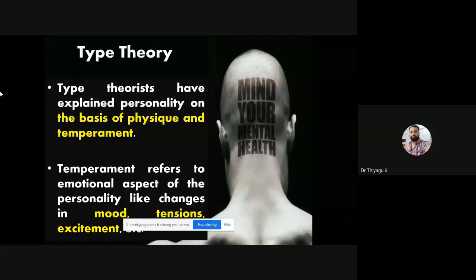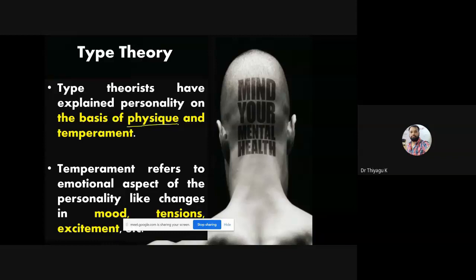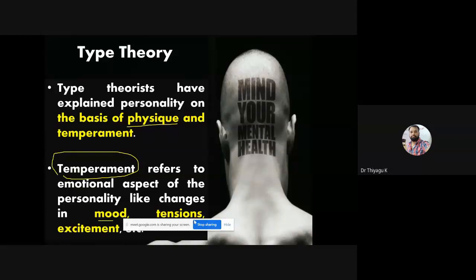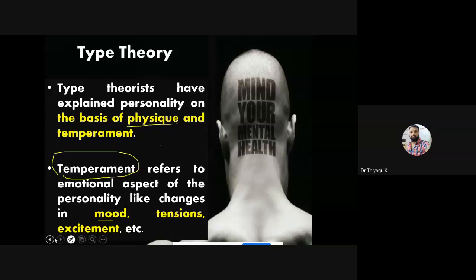What these theorists highlighted — the physique in the sense, the body type — we normally divide into lean persons, normal body type persons, and very fat persons. After the first look, we can come to some conclusions about a person's body type, but in the case of temperament, we cannot come to any conclusion just by a single observation. Temperament here refers to the person's mood, functions, tensions, how they show excitement, and how they express feelings to others.